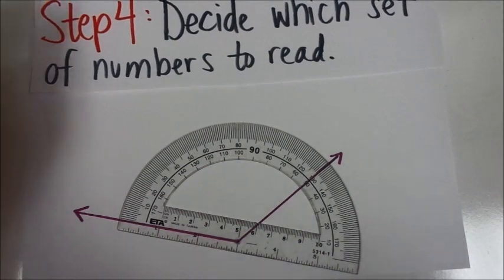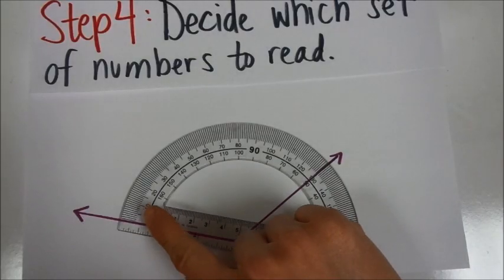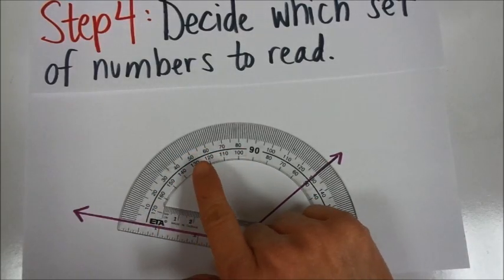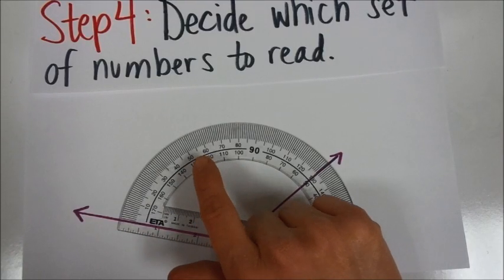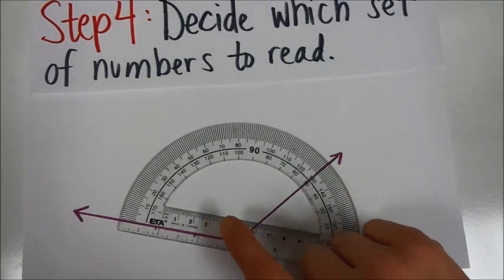Step 4 is to decide which set of numbers to read. As you can see on the protractor, as we go around, there's a pair of numbers at every spot. For example, here you can see 60 and 120. You have to decide which one of those you're going to use to measure the particular angle that you have.